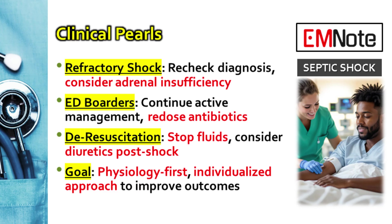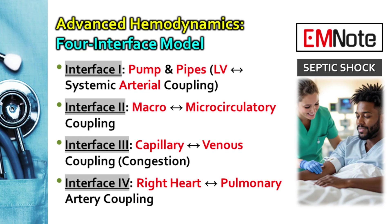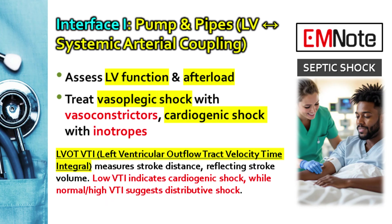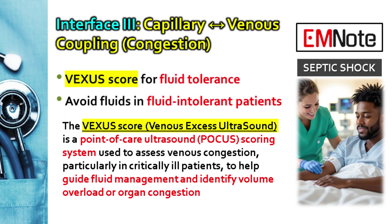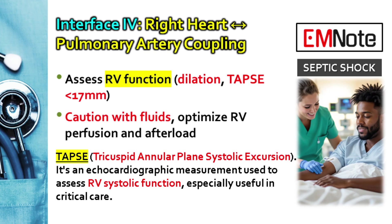Summing this all up, this physiology-first approach means getting away from chasing one number like BP or lactate. It means using clinical skills and point-of-care ultrasound smartly — tools like capillary refill time, VTI, and VEXUS — to figure out which part of the circulation is failing: pump, pipes, microcirculation, or venous return, and then target that. It's about individualizing therapy. Final thought: how are you going to actively use clinical signs like a mottling score or objective data like a VEXUS score to confidently withhold fluids when appropriate, instead of just defaulting to the monitor's blood pressure reading?